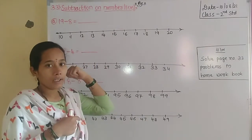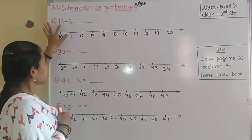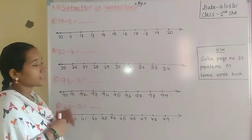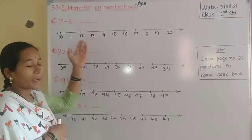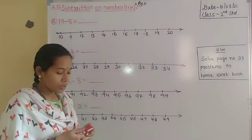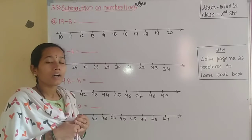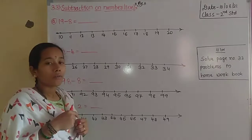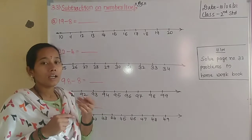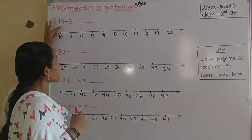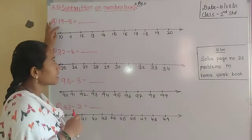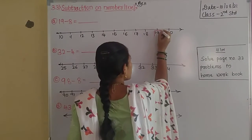Here we have to find the difference for the given subtraction problem: 19 minus 8 equals dash. 19 is the minuend and 8 is the subtrahend. Using the number line, according to the minuend and subtrahend, the number line given here has numbers from 10 to 20. The first step is to mark the minuend — which is 19 — on the number line.